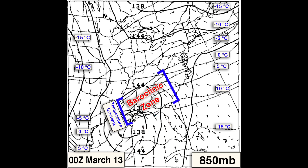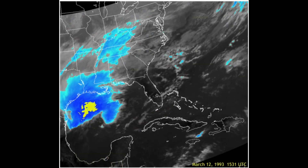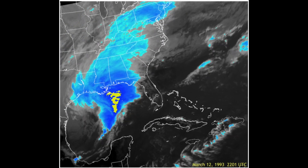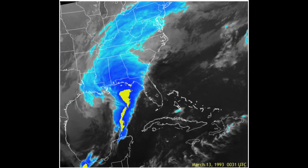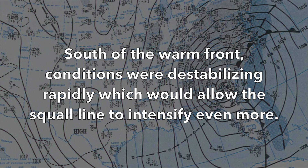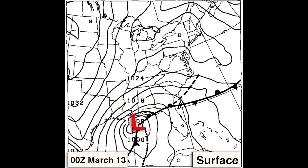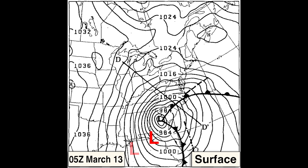A surface cold front intensified rapidly and began moving into the central Gulf of Mexico. As the cold front pushed eastward it developed a strong squall line. A southerly low-level jet developed ahead of the squall line, providing a warm conveyor belt that transported warm, moist air northward from the Gulf into the deep south, Florida, and southeast U.S. Meanwhile, the baroclinic zone began moving northward as a warm front. Precipitation began to fall over the southeast U.S. as warm, moist air advected over the warm front. The low continued eastward and made landfall along the Florida Panhandle just after midnight on March 13th.